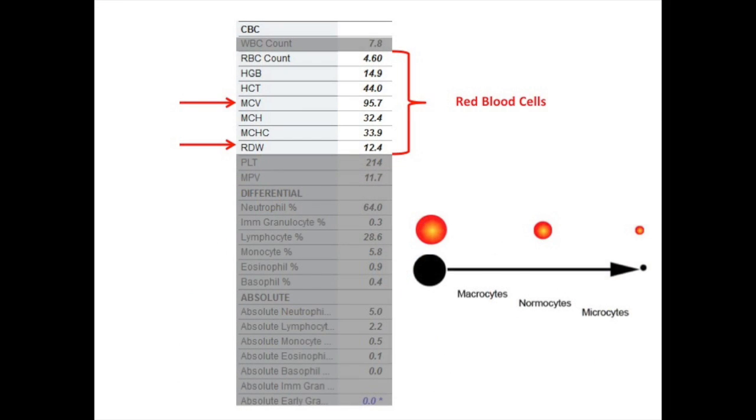There are a variety of other indices that are reported as part of the CBC but the two most important are the MCV and the RDW. The MCV is a report of how large your red blood cells are. If they are larger than normal, a value greater than 100, this may be due to a vitamin deficiency such as folic acid or B12 deficiency, or it may be a result of medication use.